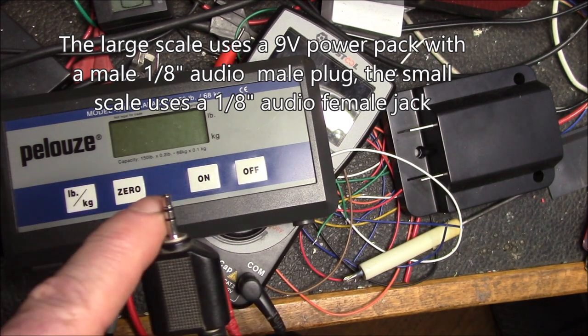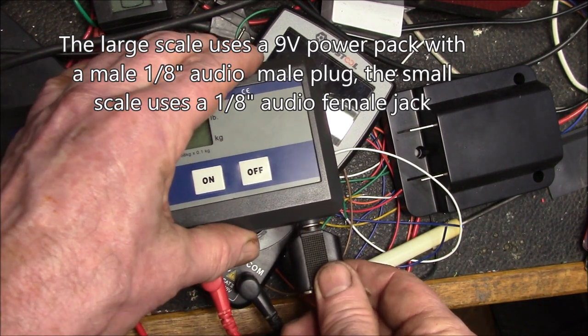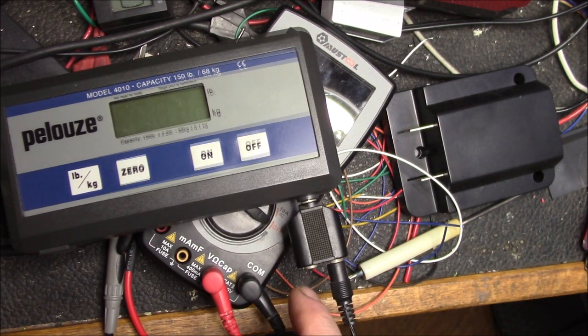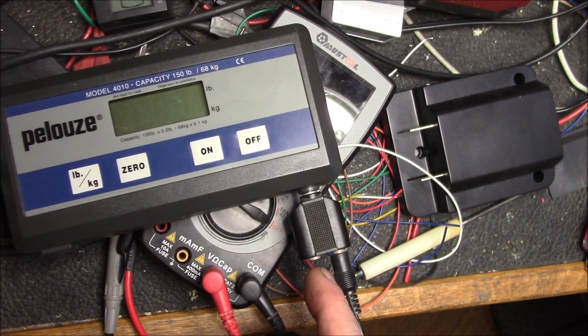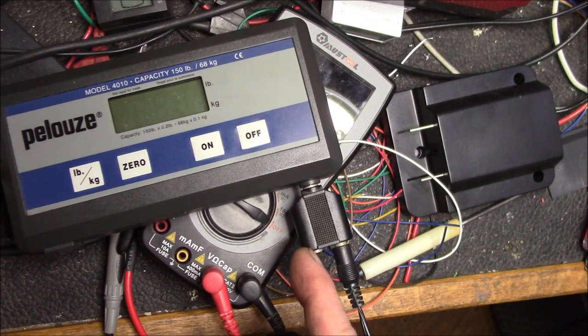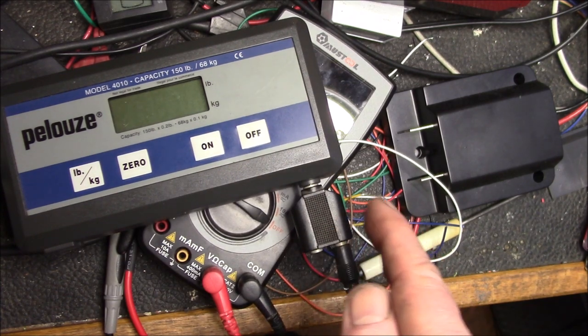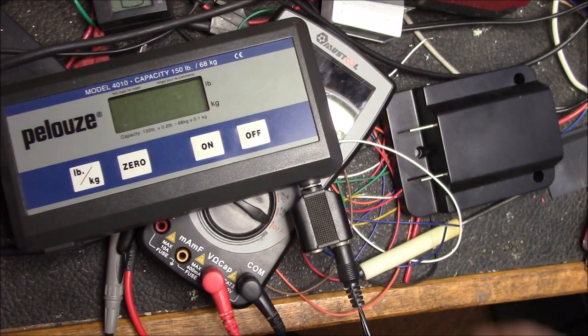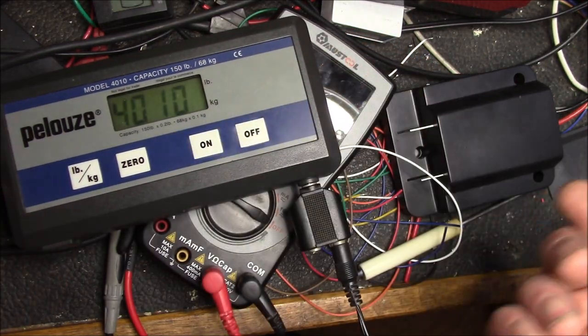Then this gets plugged in here and then I plug the cable for the 5 pound scale in here and then that way I run both of these scales off of one power supply. So you can see it still works.